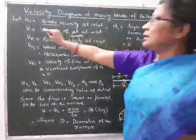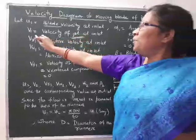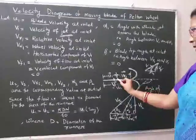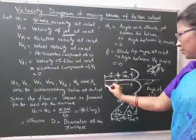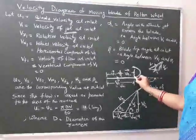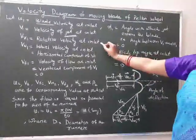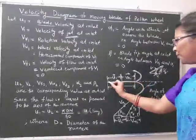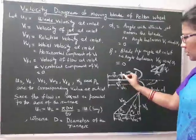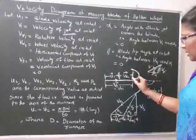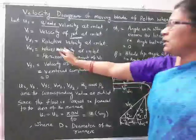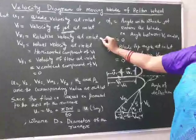At inlet, u1 is the blade velocity and V1 is the velocity of the jet. Vr1 is the relative velocity at inlet. As u1 and V1 are in the same horizontal direction, Vr1 is nothing but the mere difference of V1 and u1. So Vr1 is the relative velocity at inlet.